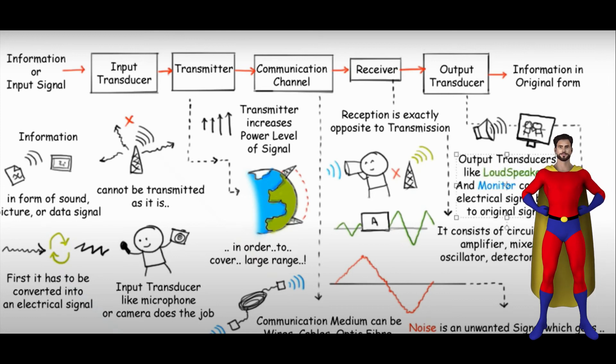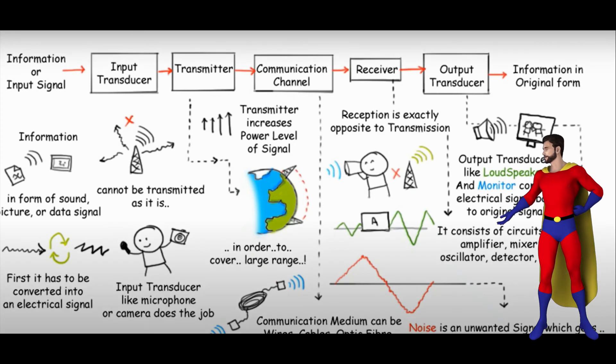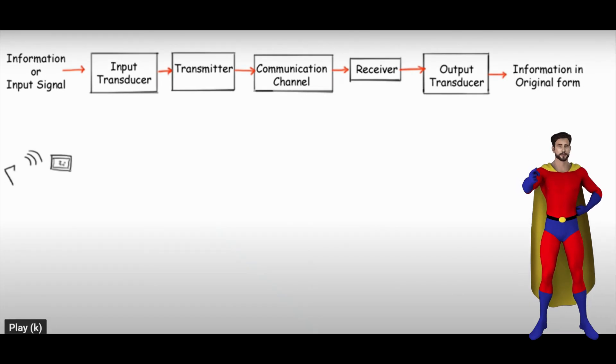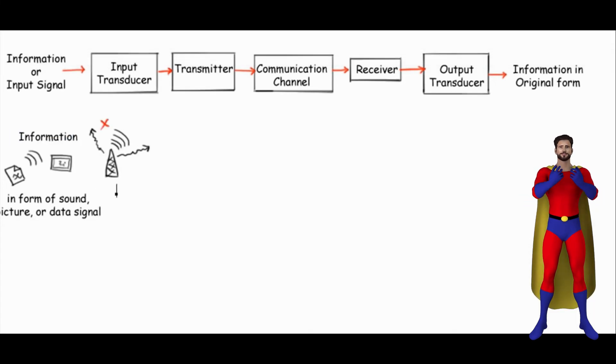Lesson 19 talks about M-ary Phase Shift Keying and M-ary Quadrature Amplitude. Lesson 20 includes the Non-Coherent Modulation, Transmission and Detection of Non-Coherent BFSK. Lesson 21 talks about Non-Coherent Differential Binary Phase Shift Keying and Detection.